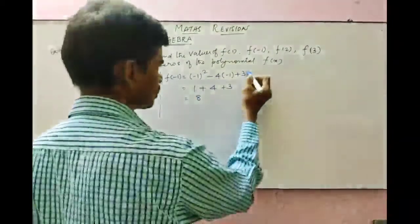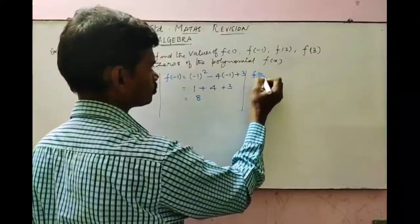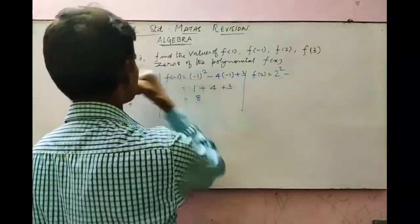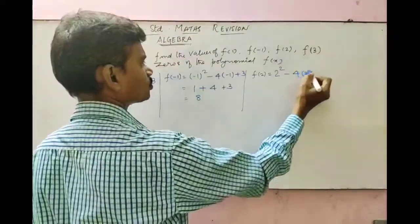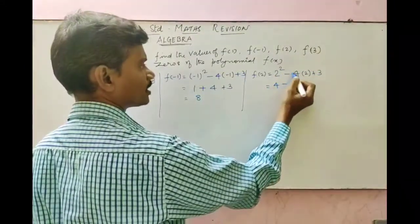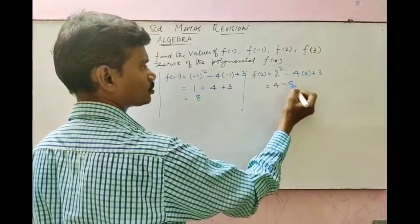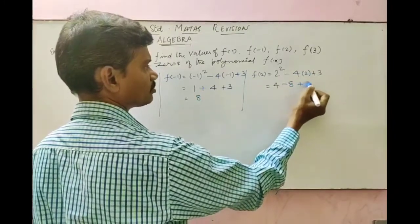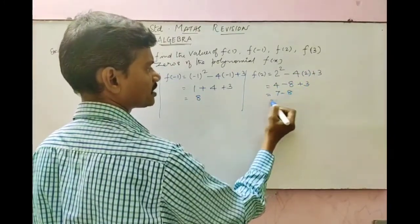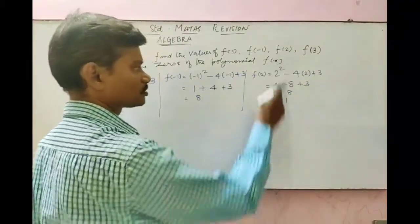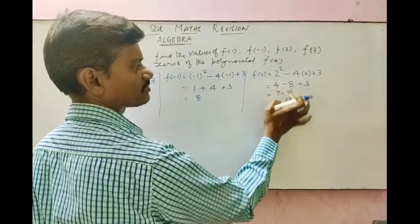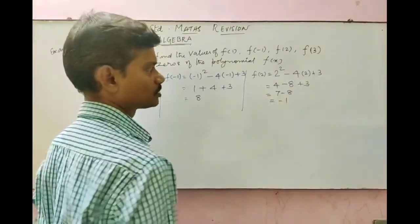The next one is f of 2. Substitute x equals 2: 2 squared minus 4 times 2 plus 3. That gives 4 minus 8 plus 3. The positive terms: 4 plus 3 is 7. Then 7 minus 8 gives minus 1. So f of 2 equals minus 1.